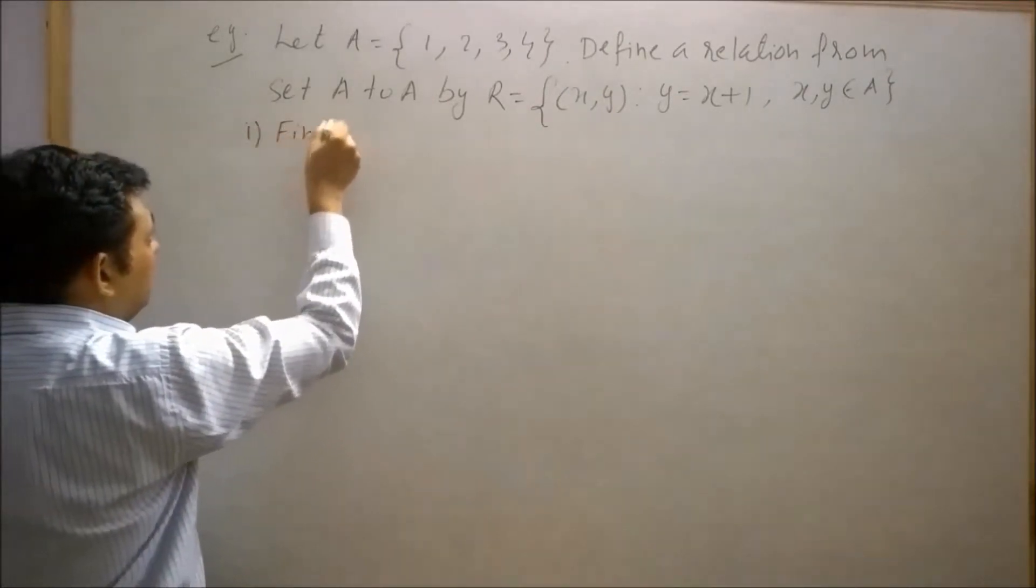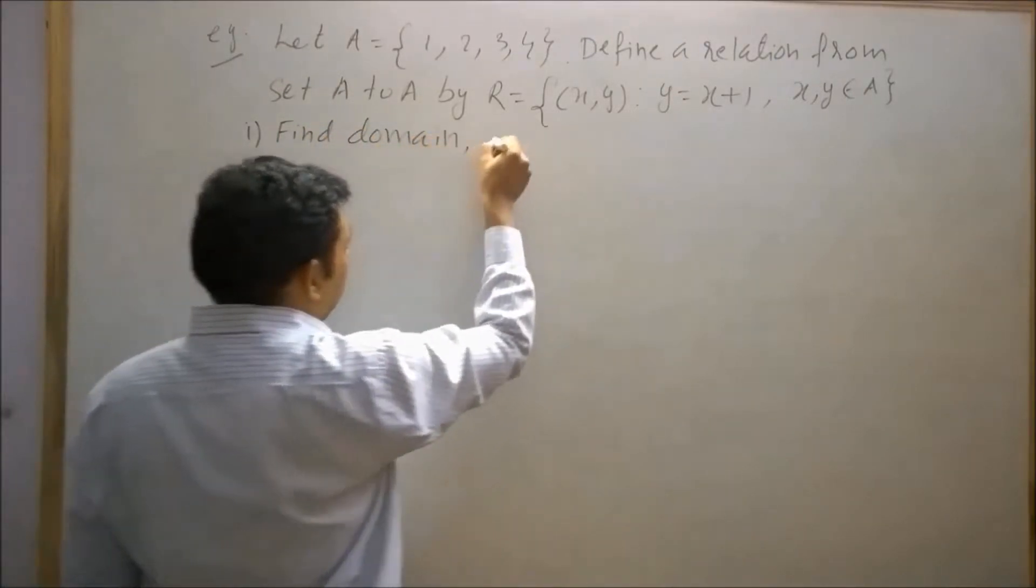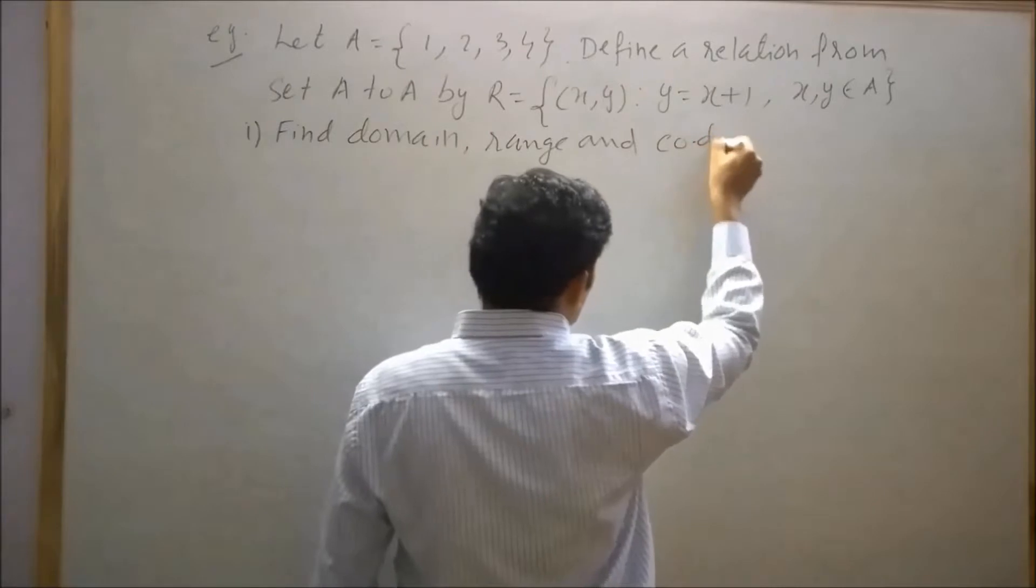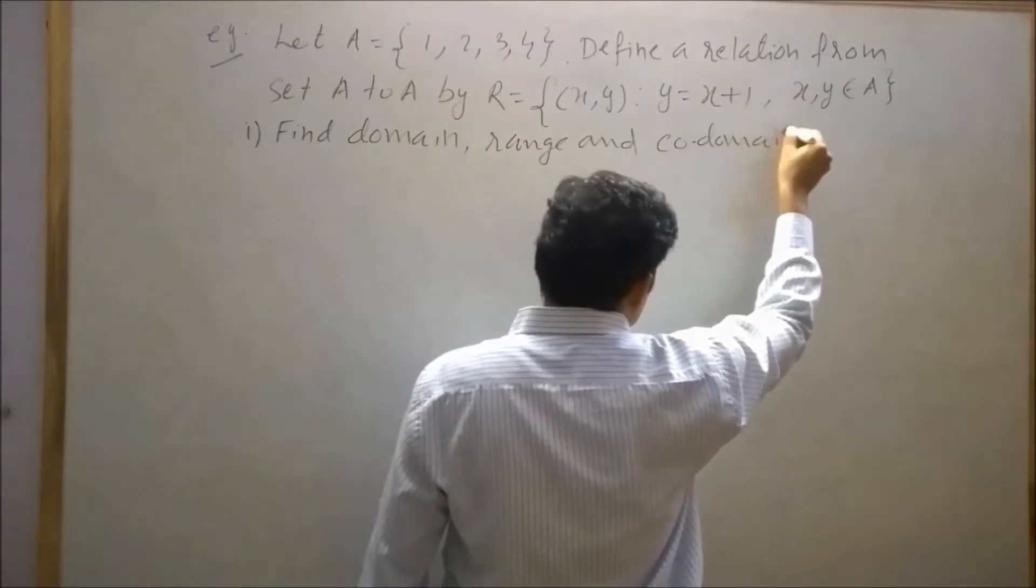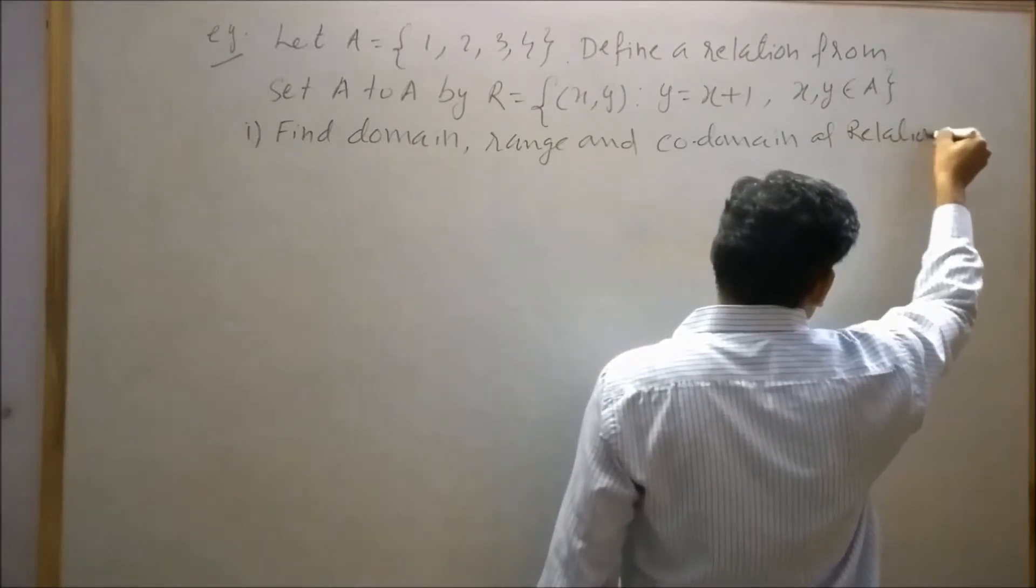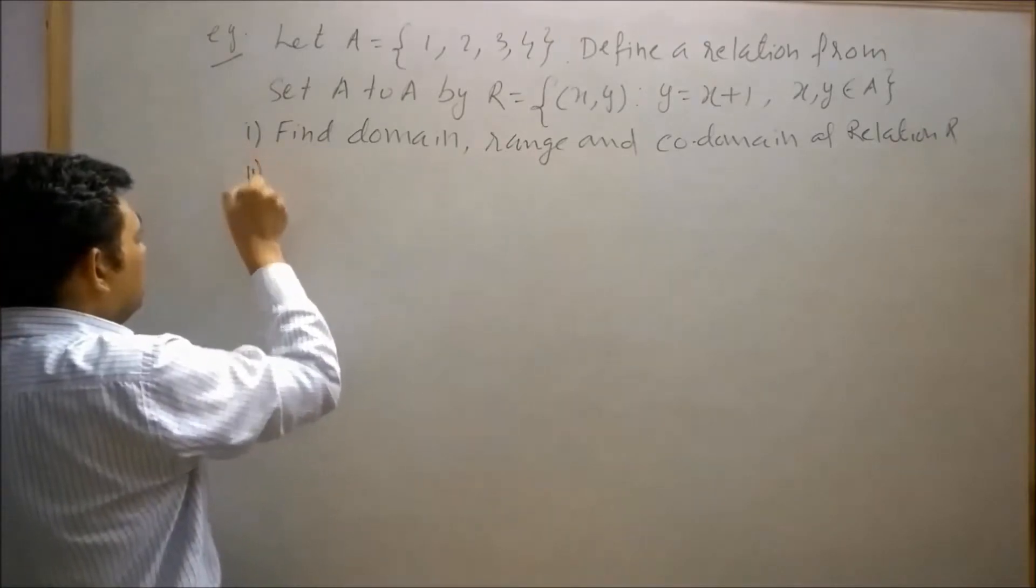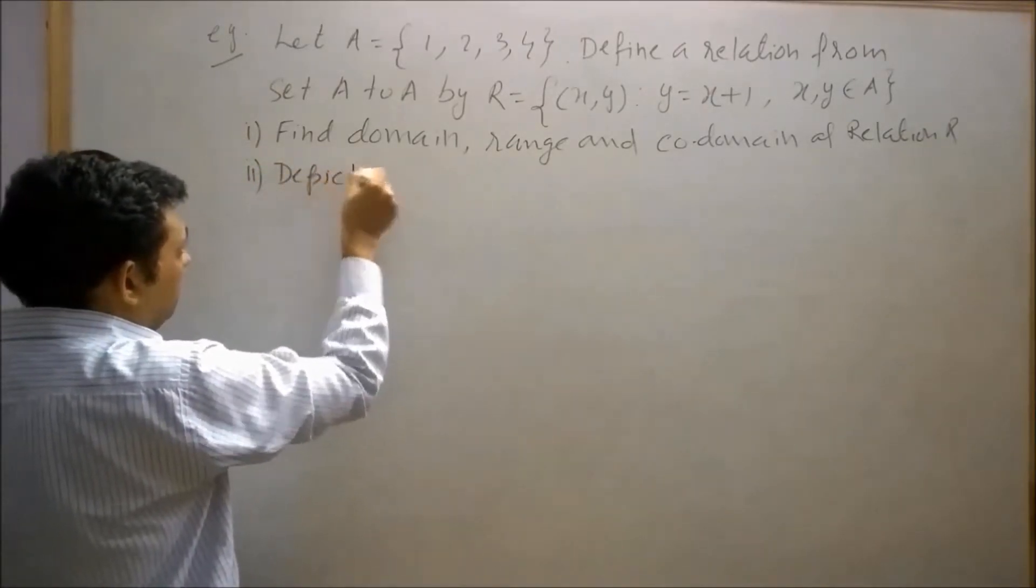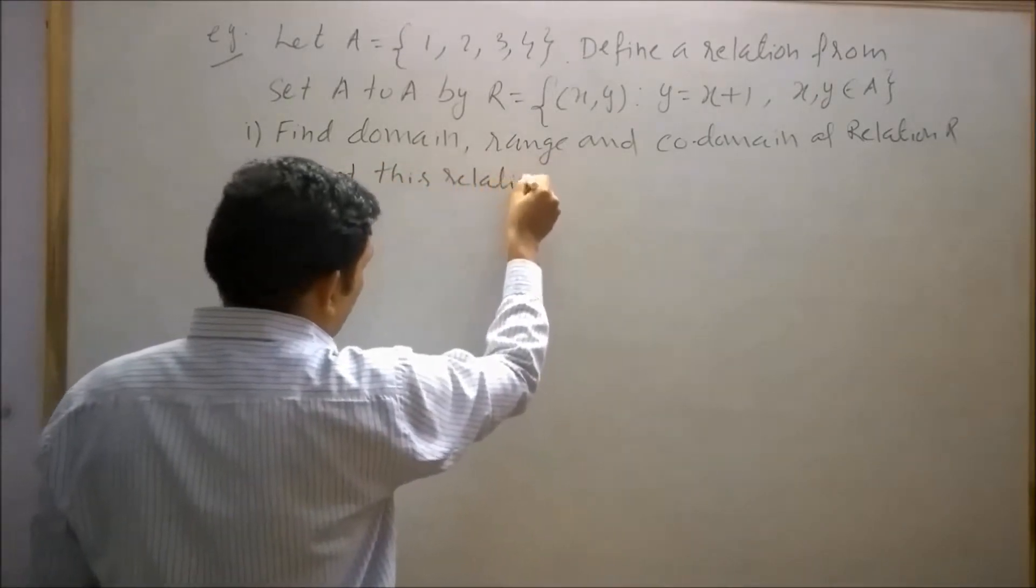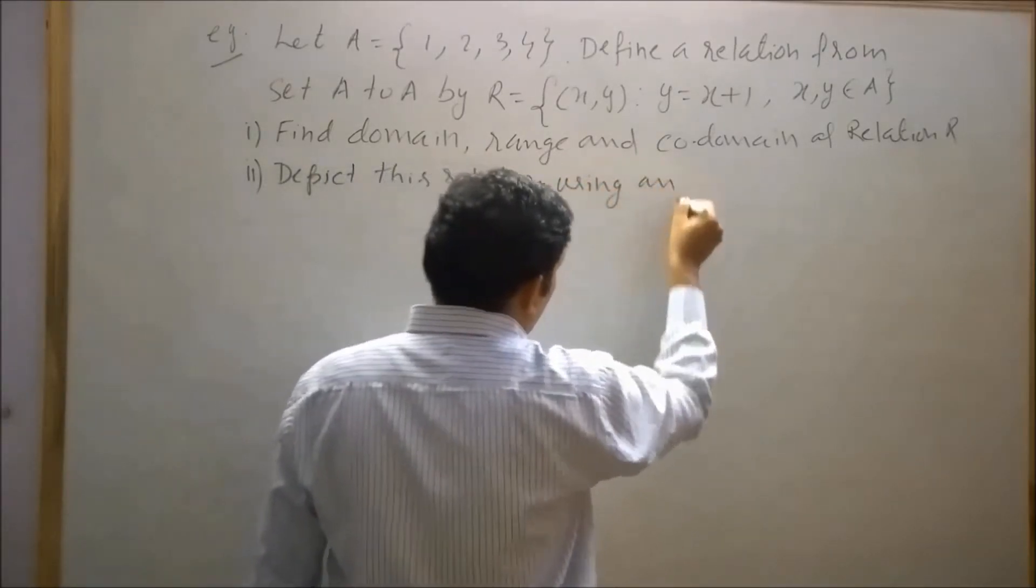Find domain, range and codomain of relation. Depict this relation using an arrow diagram.